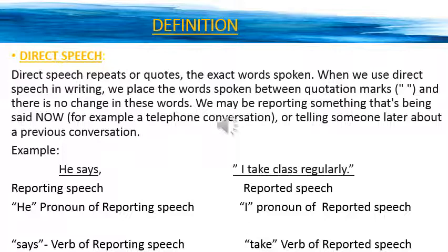After 'he says' there is a comma, and 'I take class regularly' is the actual message of the speaker, which is enclosed in inverted commas. At the end of the sentence you can see a full stop. This is the appropriate identification of direct speech — after 'says' we have a comma, and the actual message of the speaker is enclosed in the inverted commas.